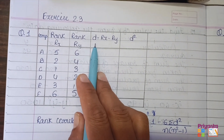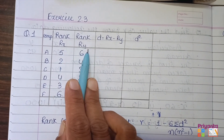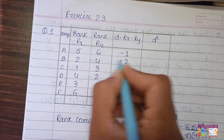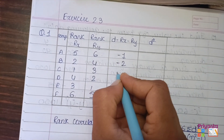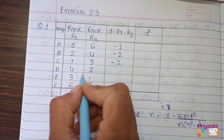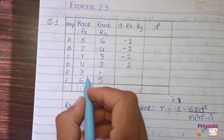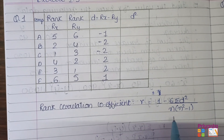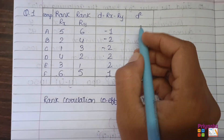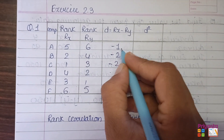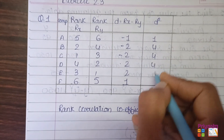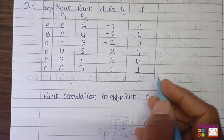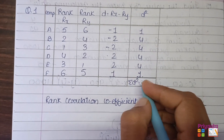Now find D, which is Rx minus Ry. So: 5 minus 6 gives minus 1; 2 minus 4 gives minus 2; 1 minus 3 gives minus 2; 4 minus 2 gives plus 2; 3 minus 1 gives 2; and 6 minus 5 gives 1. Next, calculate D squared: 1, 4, 4, 4, 4, 1. When squaring, negative values become positive. The total sigma D squared equals 18.